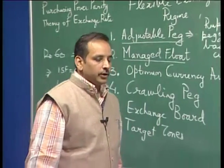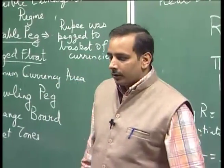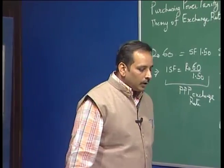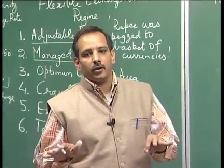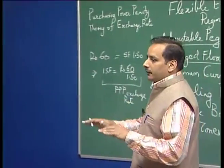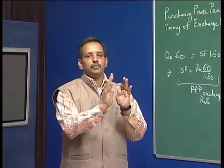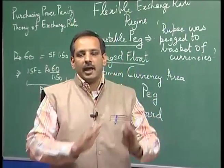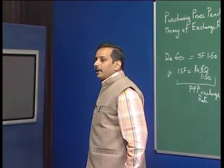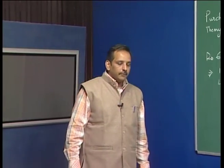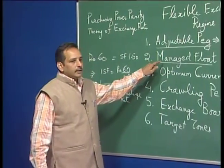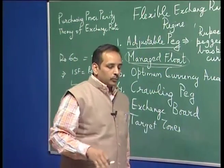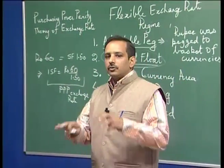This is how managed float differs from the adjustable peg. In the adjustable peg, you change your currency according to different parameters of the economy — so there is a pre-announced path. In the managed float, the government or the Reserve Bank of India intervenes for various reasons — to reduce speculation, to reduce volatility, to intervene when foreign investors suddenly take out money from India — but there is no pre-announced path. The government intervenes to maintain stability, but does not follow a fixed pre-announced rule.